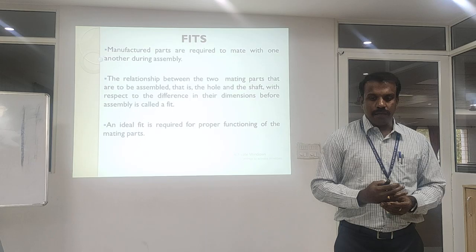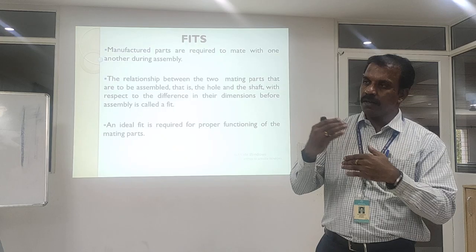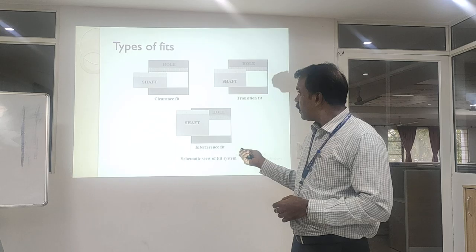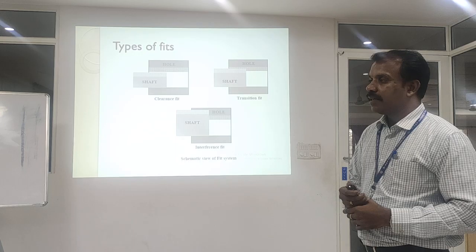The relation between the two mating parts plays a vital role with respect to the difference in dimensions during assembly. You call it a fit — that is, the gap or the overlapping between the two components required. Therefore, an ideal fit is always required for the proper functioning of mating parts. Coming to fit, you normally have three types: one is your clearance fit, the transition fit, and your interference fit.